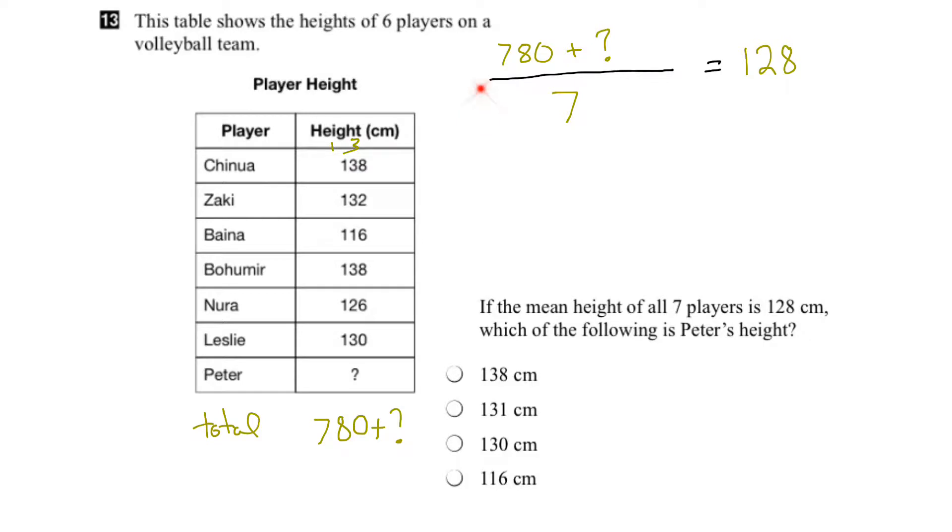So now we have our equation and we have to solve for the question mark. The first thing we notice is that we've got to get rid of this 7 at the bottom. This means divide by 7, so do the opposite operation. We're going to multiply by 7, and whatever we do to one side we've got to do to the other side. So the 7's here cancel. On the left we've got 780 plus question mark, and then we multiply 128 by 7, and if we do that we get 896.